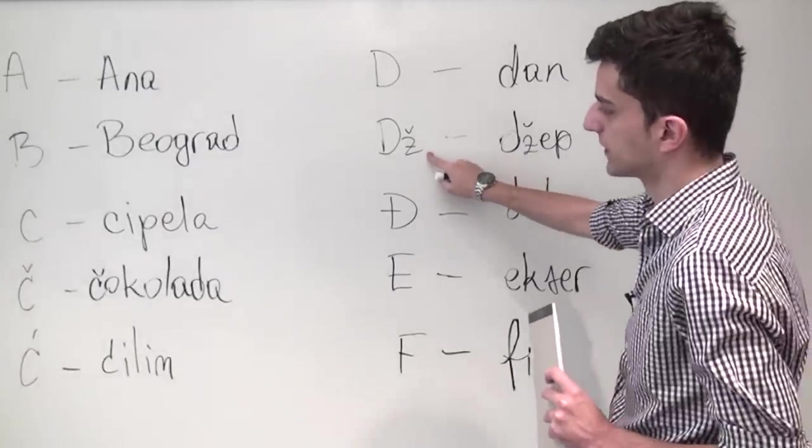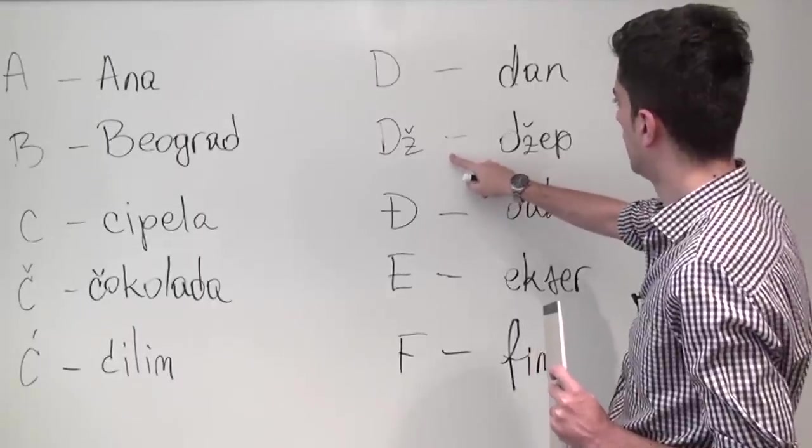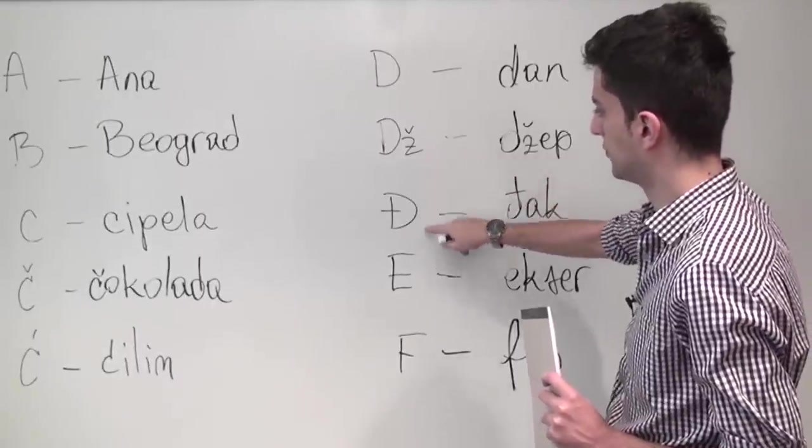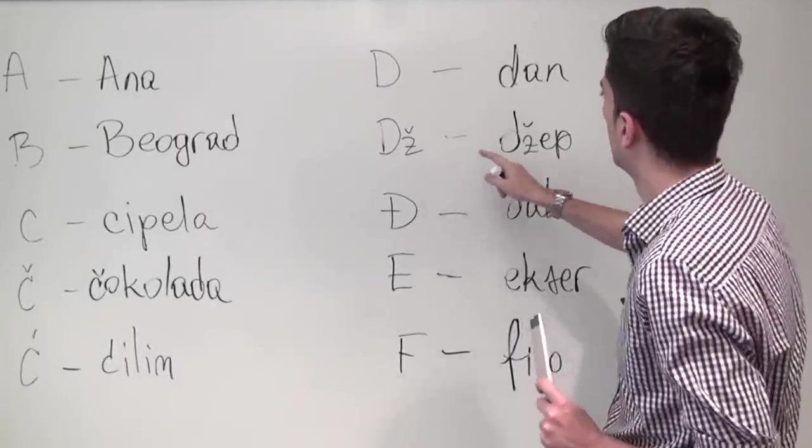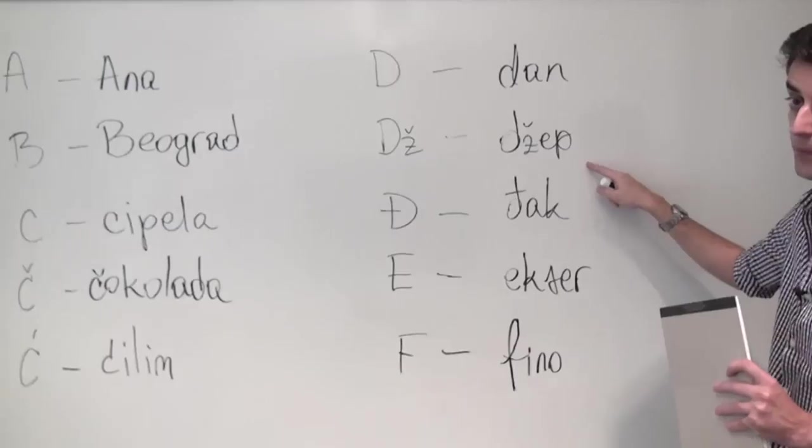It's also a bit harsher sounding just like Č, so pay attention to the difference between Dž and Đ which we'll get to in a second. Dž can be heard in the word džep which means pocket.